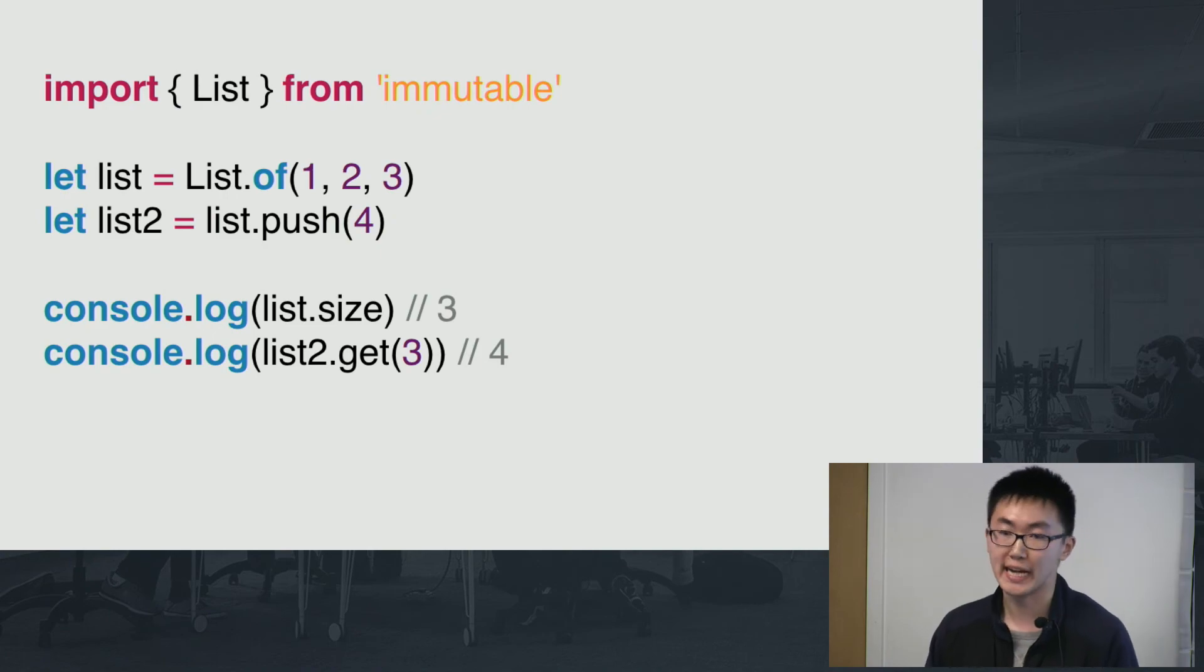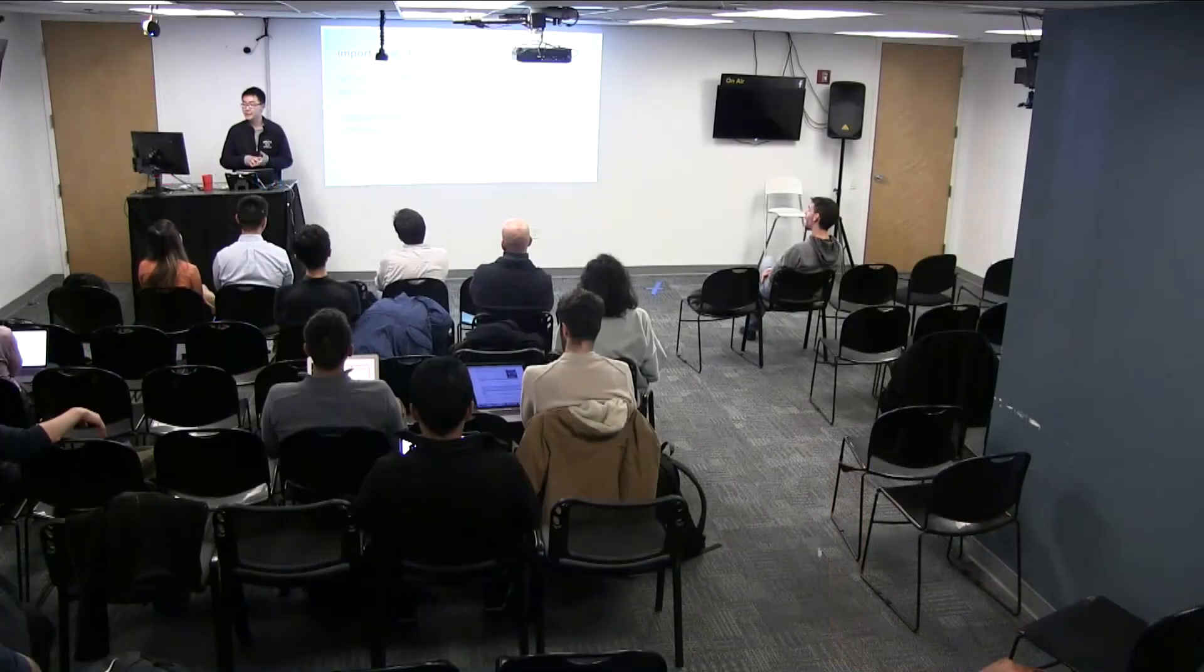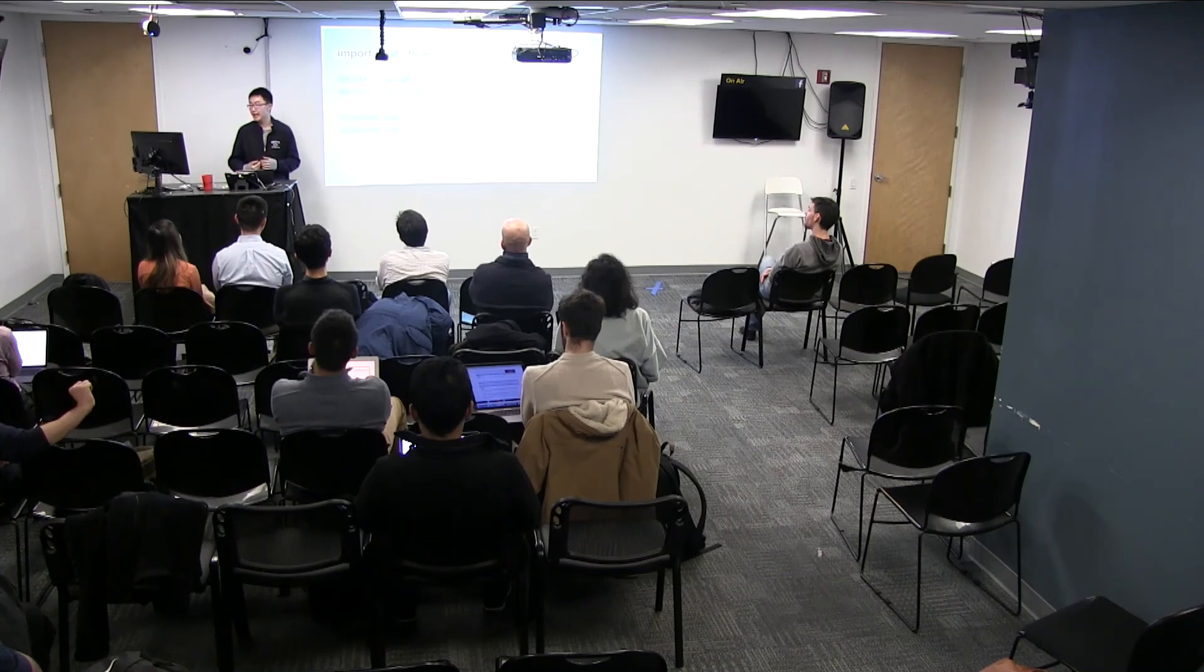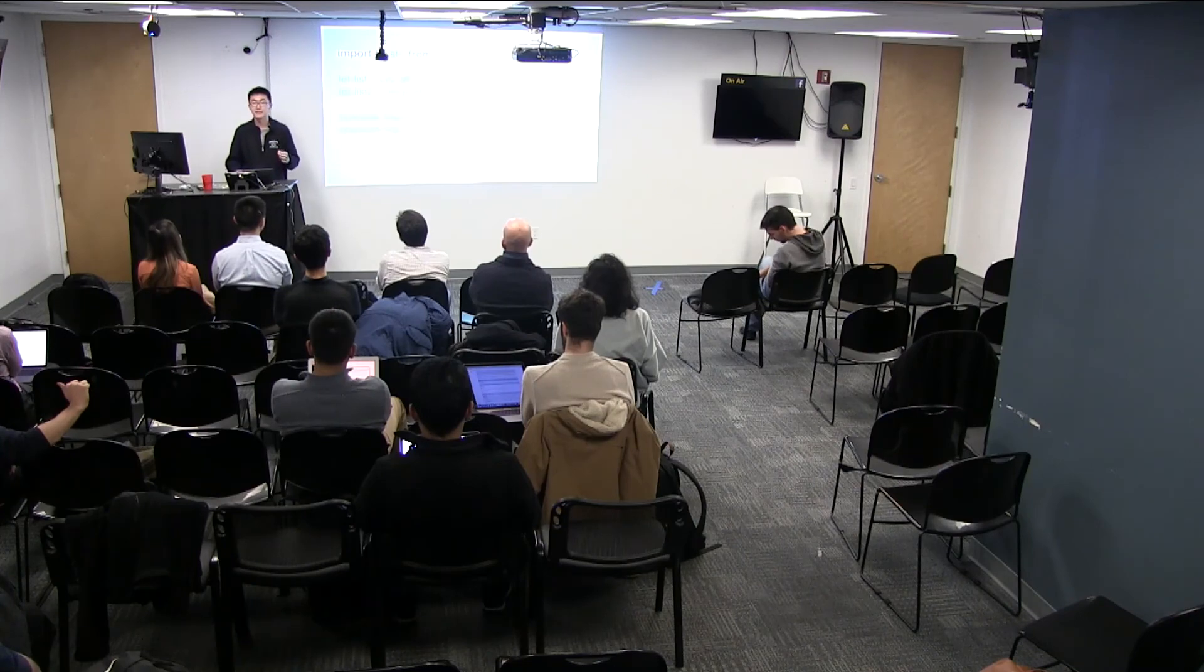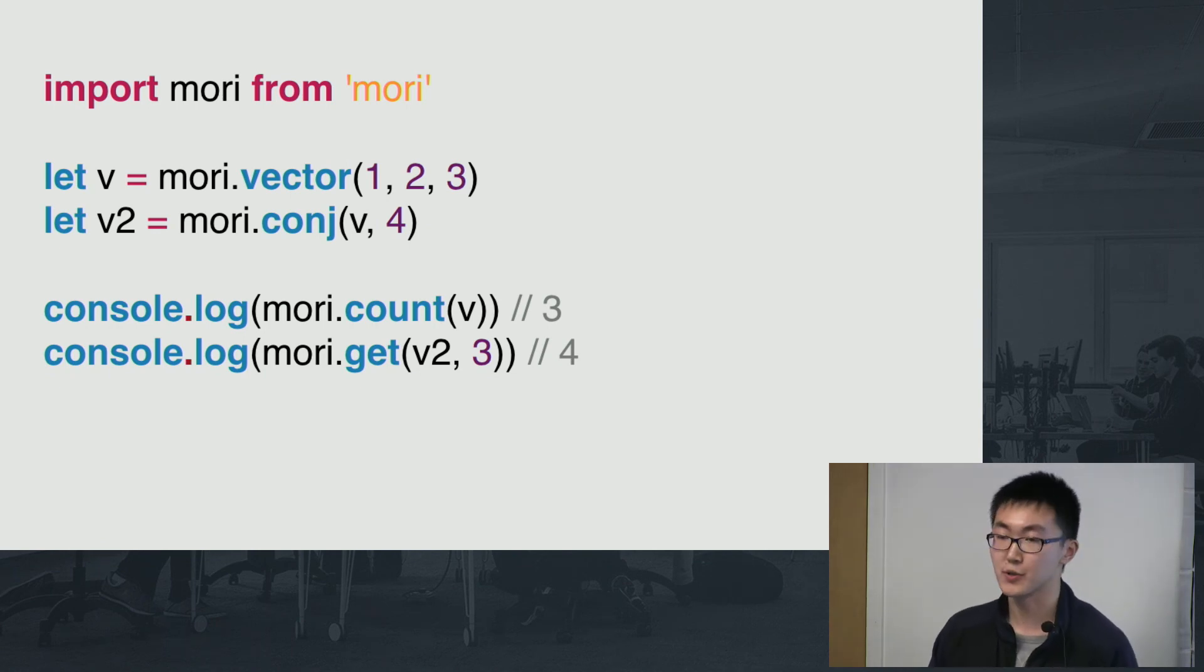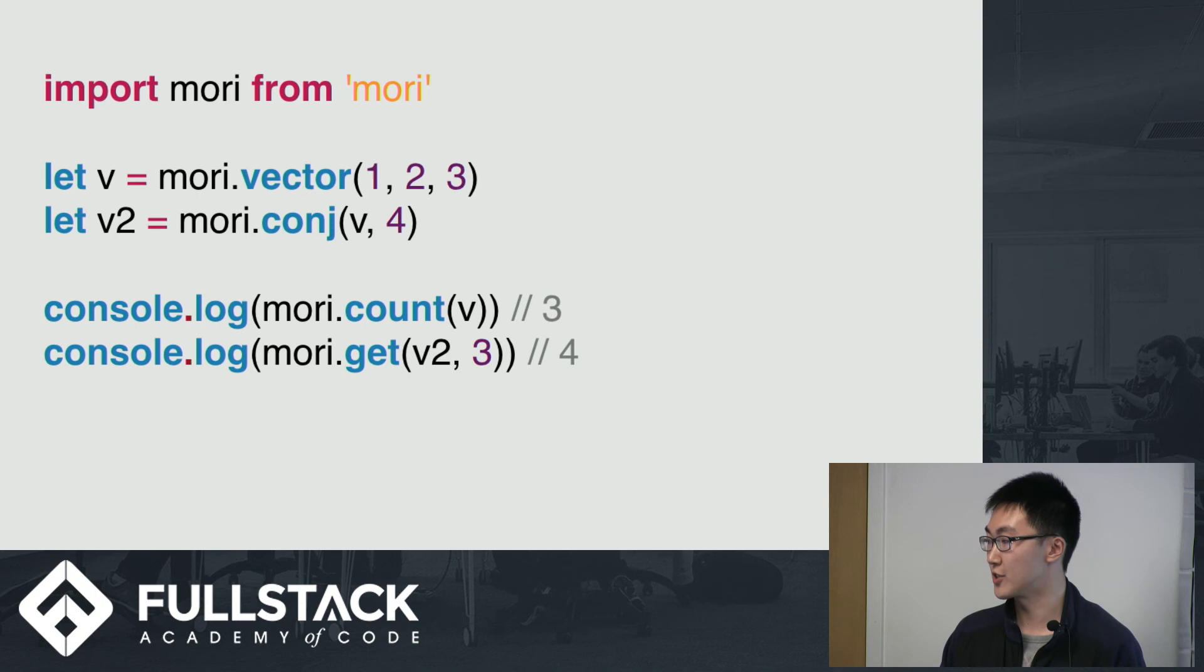So let's look at an example from immutable. So we'll have a list of three elements: one, two, three. And if we want to add a new element to the list, we'll push four into the list, and it will give us back a new list, list two. And we can then check the original list still has three elements. And the new list will have the fourth element on index three with a value of four. And this is the same code in Mori, except that now instead of a list, we'll be creating a vector, which is the Clojure equivalent of array. And then we'll do Mori conjunct, original vector, and the value of four to get a new vector, V2. And we can still see that the original vector still has three elements in it, and the new vector, V2, now has a fourth element on index three with a value of four.